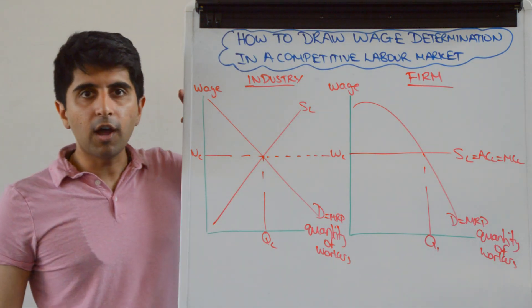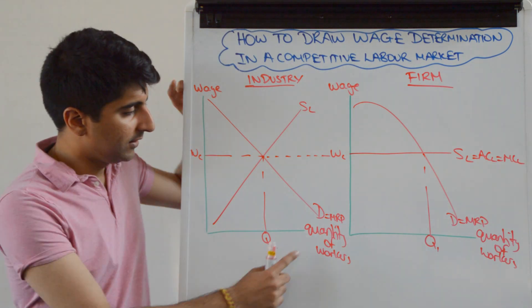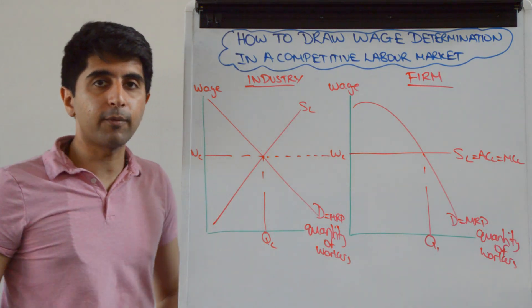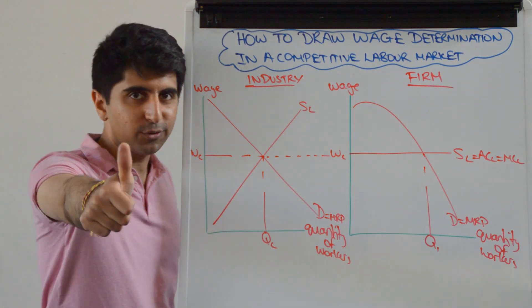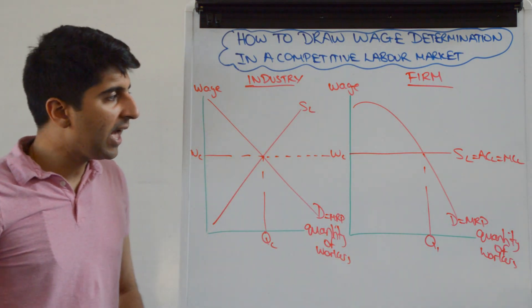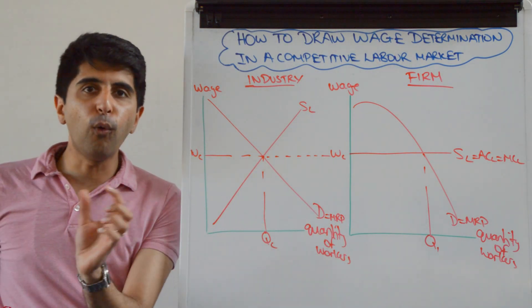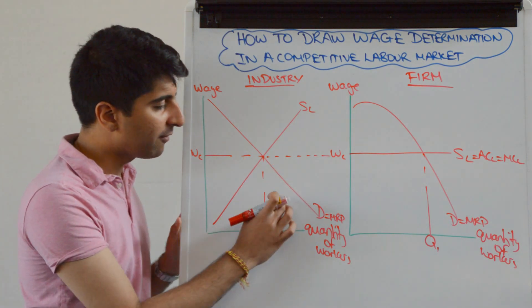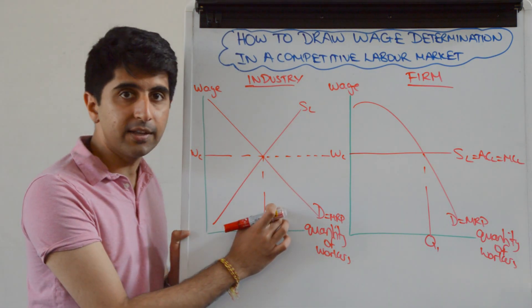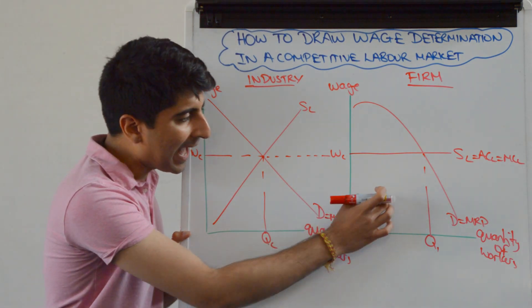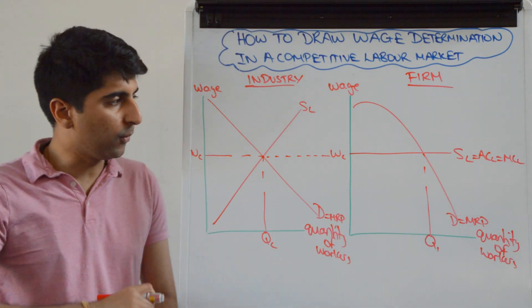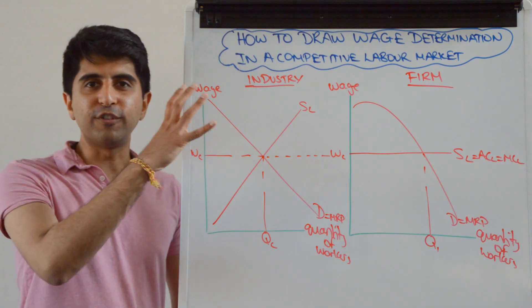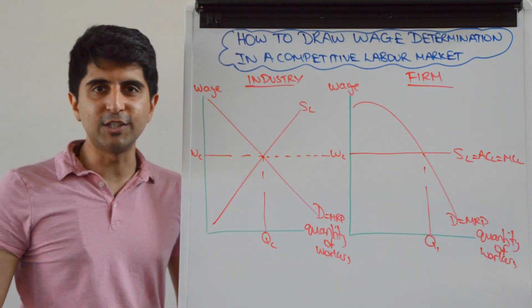Have we labelled our axes? Yes, we have on both diagrams. Have we labelled all of our curves? Yes, we have perfectly. Have we labelled all of the different equilibria? Yes, we have both in the individual market and for the firm. Perfect. In which case, we've aced our diagram. We've shown exactly what we need to.